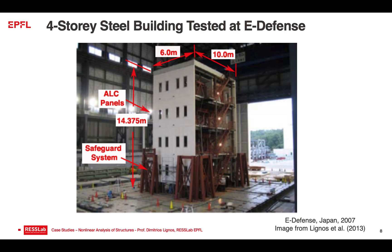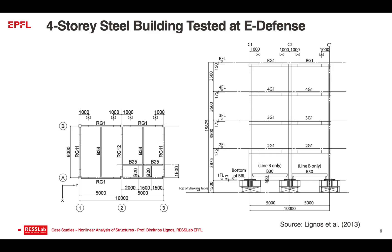The second case study is more interesting in the sense that you will see many aspects of modeling. This is a four-story building that was tested in Japan at full scale at the E-Defense shake table. In the Y direction there is a two-bay frame, and in the X direction a one-bay frame. The building was constructed according to the Japanese code using capacity design — the strong column-weak beam ratio is larger than 1.5, compared to 1.3 in Europe and 1.0 in the US.